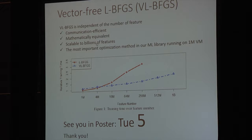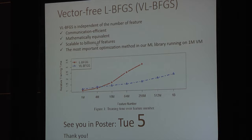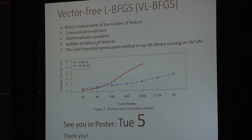What I mean by vector-free is that the main procedure in L-BFGS is independent of the number of features, so you can handle billions of features with perhaps only one gigabyte of memory. Importantly, this is mathematically equivalent — not an approximation — so the accuracy is the same, and it is scalable to billions of features. We have a distributed machine learning library running on about one million VMs in our cluster, and L-BFGS is the most important optimization method there. In our experiments, traditional L-BFGS is limited to 200 million features, but with this new approach, one billion features is no problem. Welcome to our poster, number five.